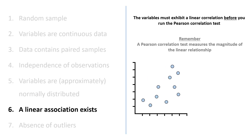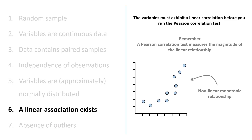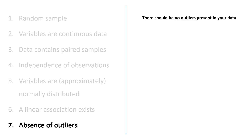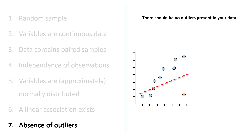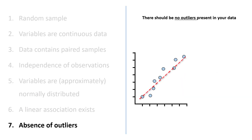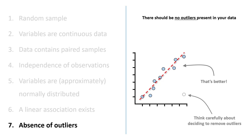When inspecting this scatterplot, a non-linear relationship could exist. If so, you can measure the magnitude of a non-linear monotonic relationship with a Spearman correlation test. The final assumption covered here is that there should be no outliers present in your data. The best way to test for outliers is to plot a scatterplot. Outliers can heavily influence a Pearson correlation test. For example, if I remove this outlier, notice how the association improves. If you have outliers in your data, you will need to think carefully about your next steps: either remove the outliers with justification, or run a correlation test that is less sensitive to outliers, such as a Spearman correlation test.